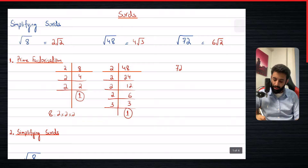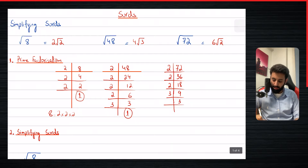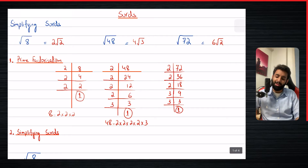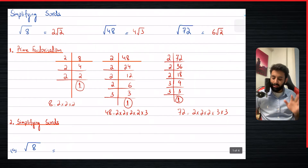Now it's time for 72. So 72 — we can divide by two: two into 36, which we can divide by two again: two into 18, which we can divide by two again: two into nine, nine divided by three is three, and then three divided by three is one. So this is the prime factorization of 72. Now let's write them down: 48 can be written as two times two times two times two times three, and 72 is two times two times two times three times three. This is basically how prime factorization is done — you can take any number and write it as a product of its prime factors.